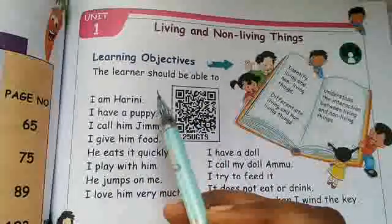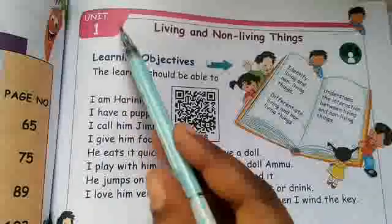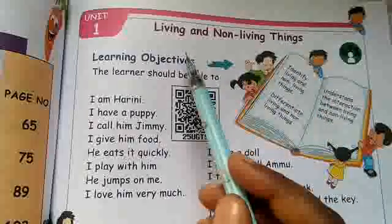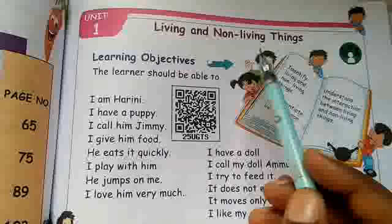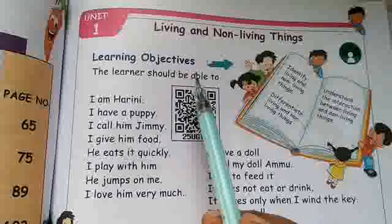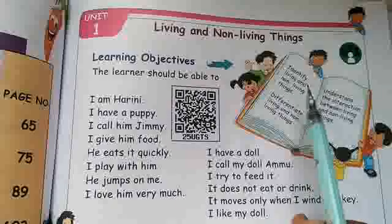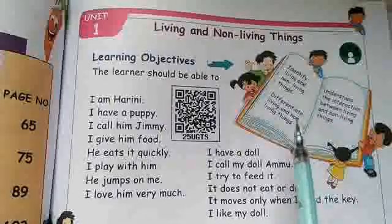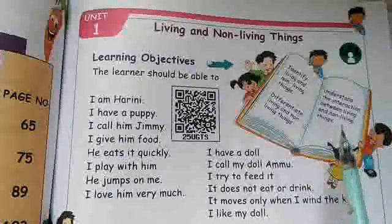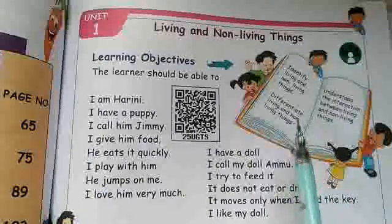Hi students, this is First Standard EVS - Environmental Science. The topic is living and non-living things. Learning objectives: when we complete the lesson, we must know how to identify living and non-living things, differentiate living and non-living things, and understand the interaction between living and non-living things.